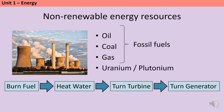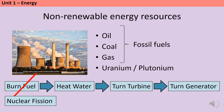We undergo a similar process using nuclear fuels like uranium and plutonium, but these don't need to be burned. Instead, they undergo nuclear fission, also known as radioactive decay. As the atom splits apart, a huge amount of energy is transferred by heating. From this point onwards the process is the same: the heat heats the water, which turns into steam, which turns the turbine, which turns the generator.